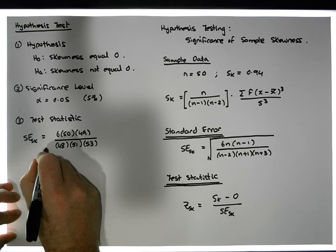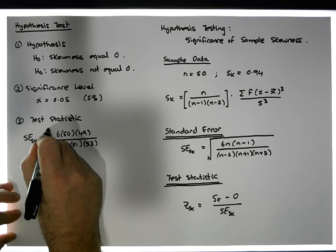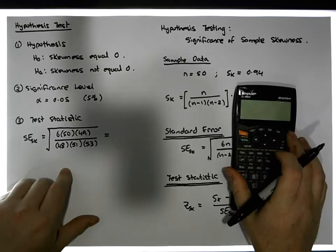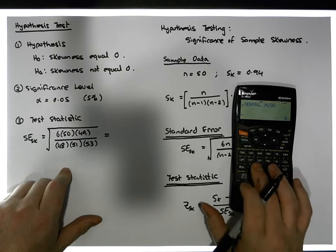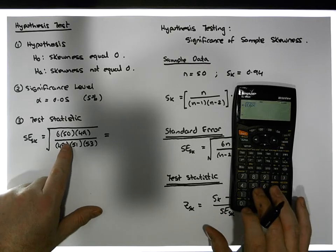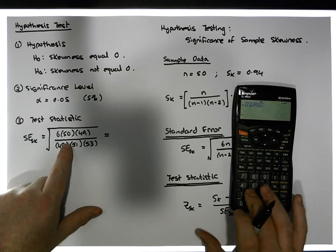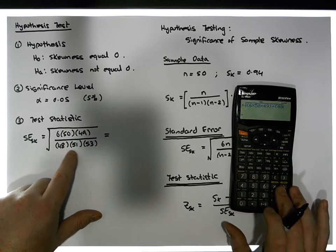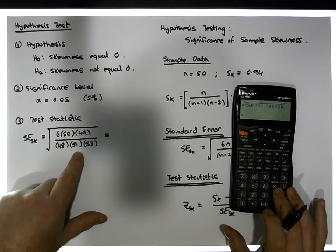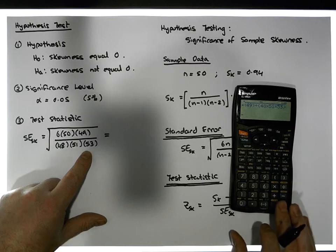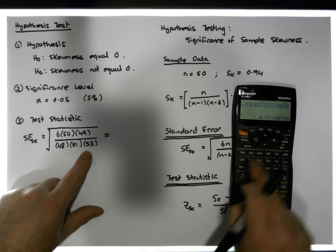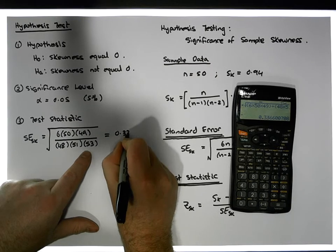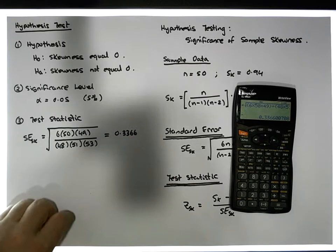That gives us 53, and it's the square root of this particular value here — that gives us our standard error. We're going to calculate the square root of 6 times 50 times 49 in the numerator, divided by 48 times 51 times 53. That gives us a standard error of 0.3366 to four decimal places.